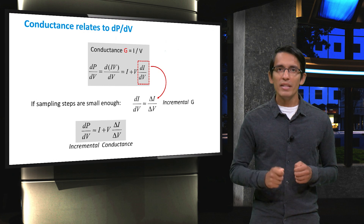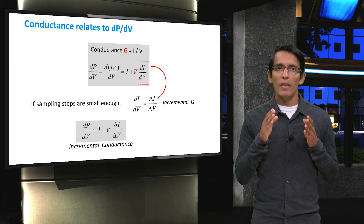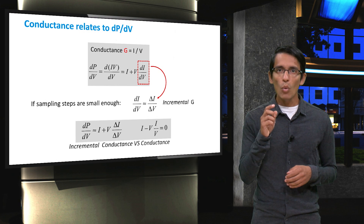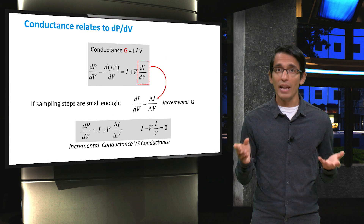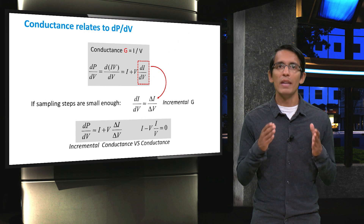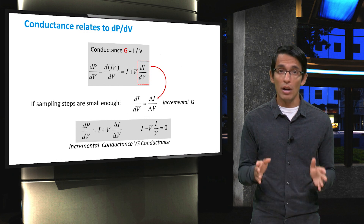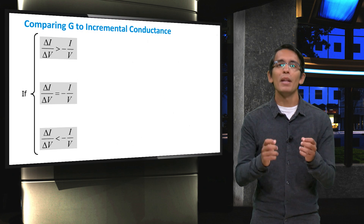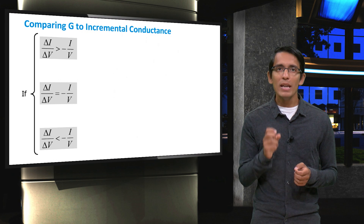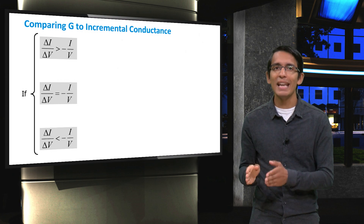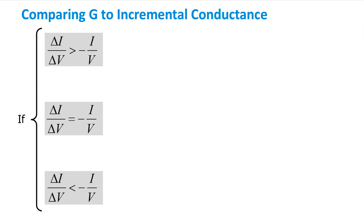The next thing we can do is replace the incremental conductance in this equation with the negative instantaneous conductance, or −I/V. When we do this, we get zero as an answer. With this in mind, we can use the relationship between the incremental conductance and the instantaneous conductance to determine which side of the curve we are on. To explain this, we look at three different cases, comparing the incremental conductance to the negative instantaneous conductance. The incremental conductance can be greater than, equal to, or less than the instantaneous conductance.